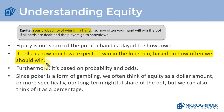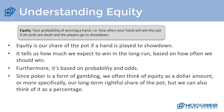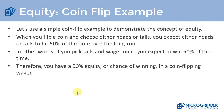In poker, because poker is a form of gambling, we often think of equity as a dollar amount — our long-term rightful share of the pot. For example, if there's a hundred dollars in the pot with pocket queens versus ace king, pocket queens' long-term equitable share of that pot is $55, whereas ace king's is $45. We can think about equity from either a percentage perspective or a dollar perspective.